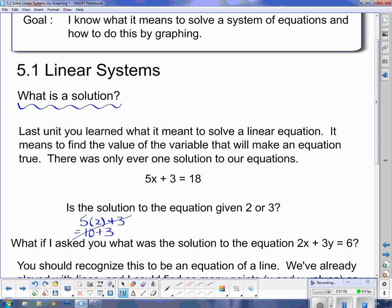So 5 times 3 plus 3 is 15 plus 3, which is in fact 18. That one works. So the solution to that equation I gave you was 3. Now, there's only one solution. There's no other value of x that I can plug into that equation that will make 5x plus 3 equal to 18. There's only that one.